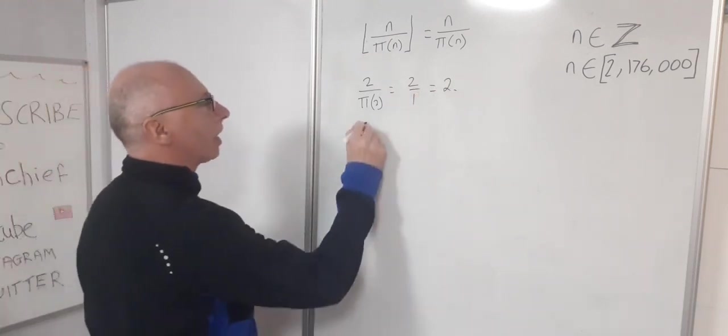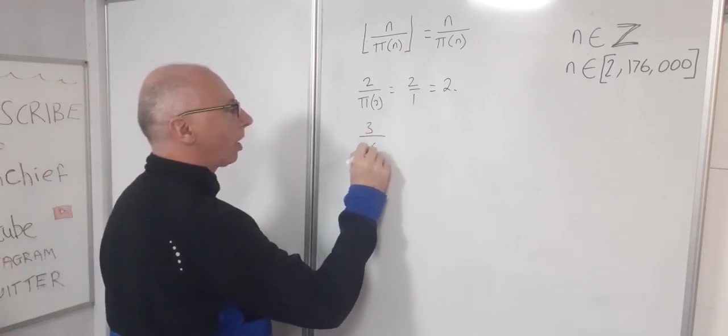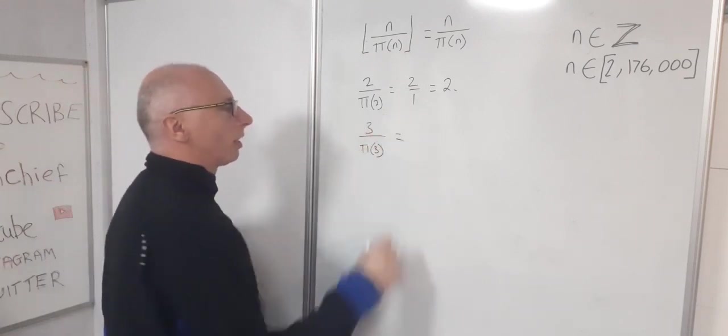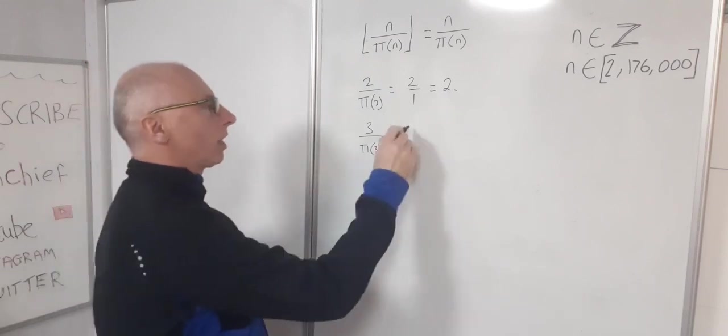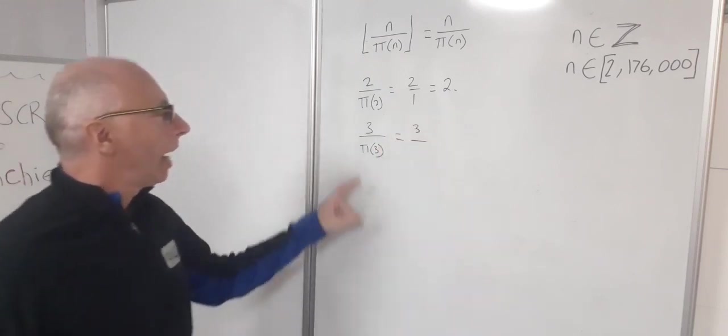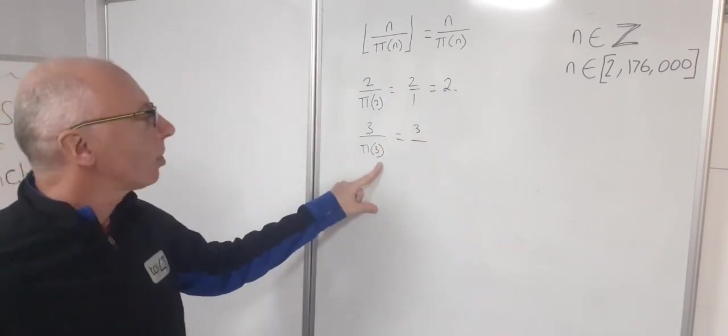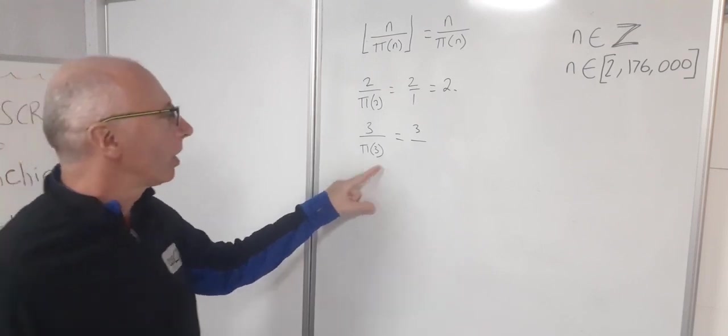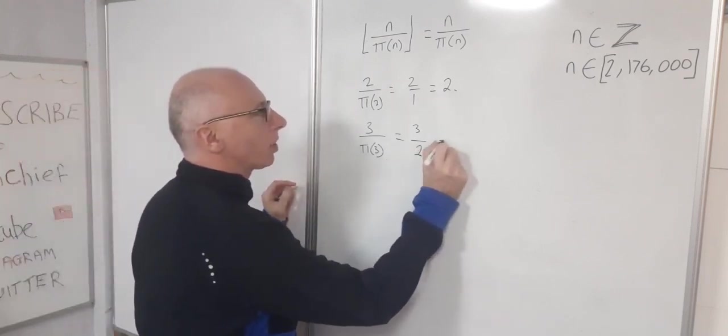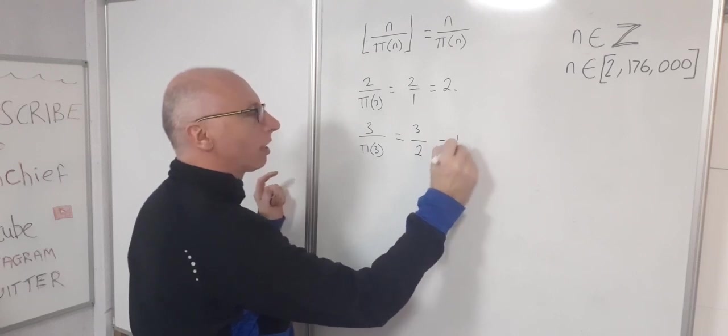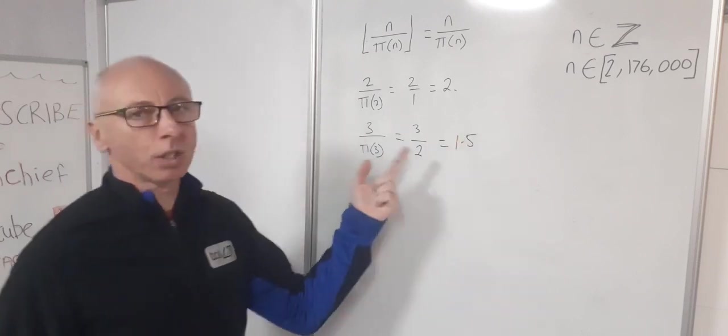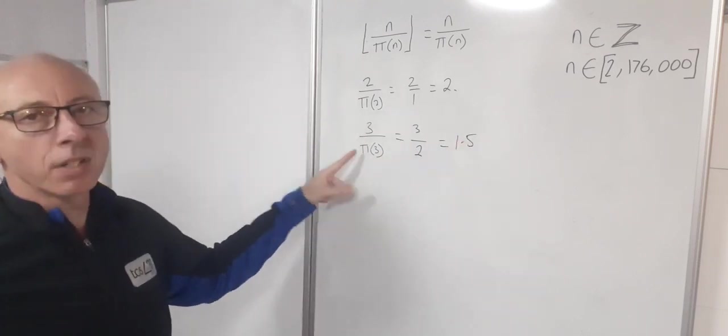Now look what happens when we get to 3. So 3 over pi of 3, so that gives us 3 is continued and pi of 3, so there is two prime numbers up to and including 3, so that gives us 3 over 2 so that equals obviously not a whole number. So that's no good to us. So pi of 3 is no good.